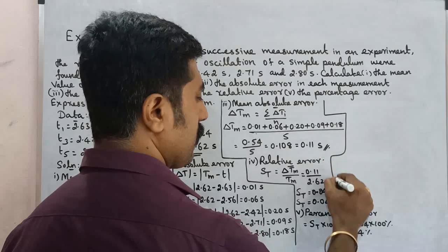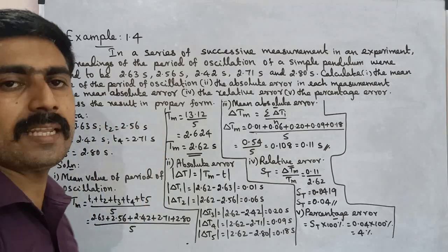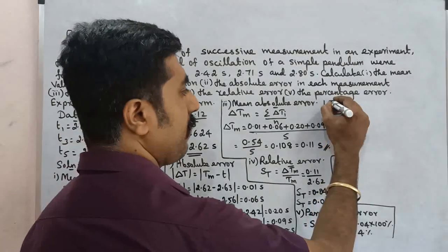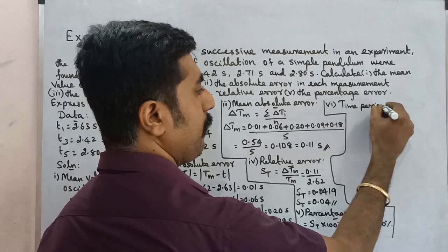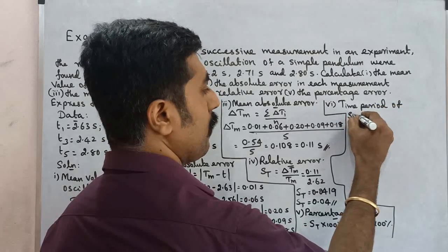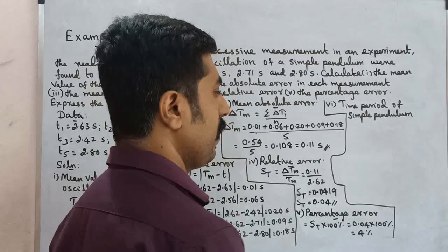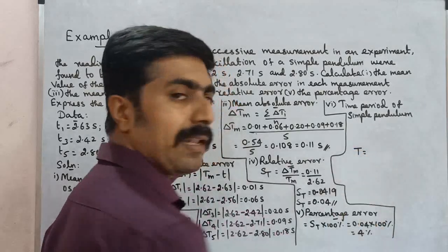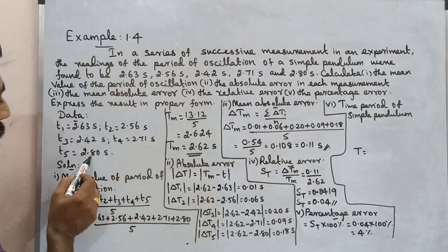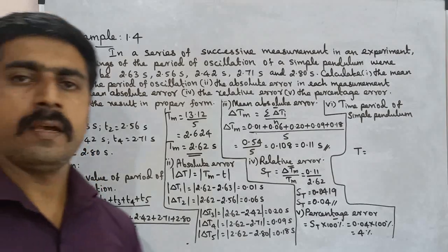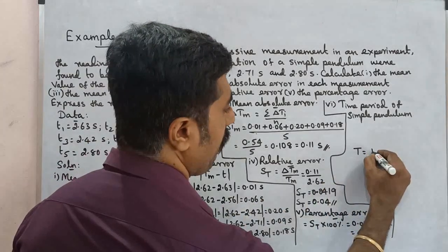And see the last one — step 5: express the result in proper form. Time period of simple pendulum. Using the general formula for propagation of errors: a = a ± delta a. So time period t = tm ± delta tm.